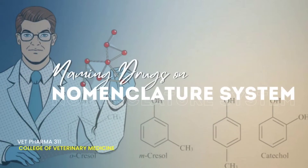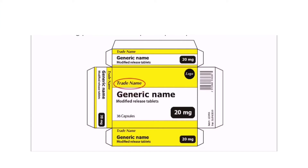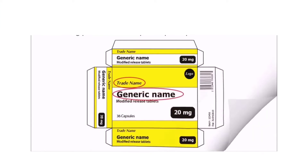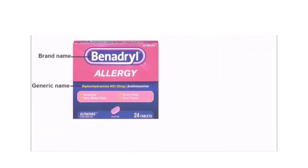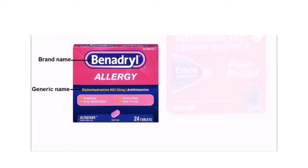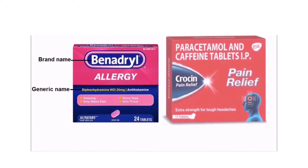Hola! In this episode, we will talk about naming drugs or nomenclature system. This is an example of naming drugs. For the brand name, we have Benadryl, and its generic name is diphenhydramine hydrochloride.